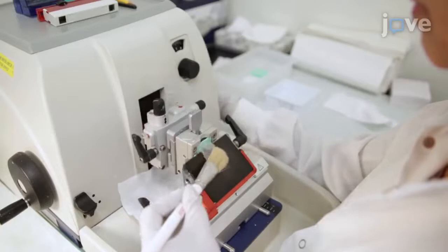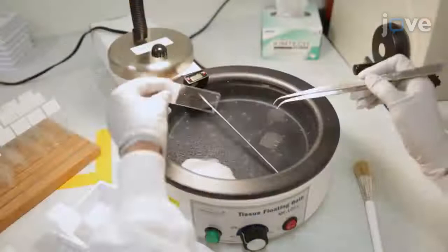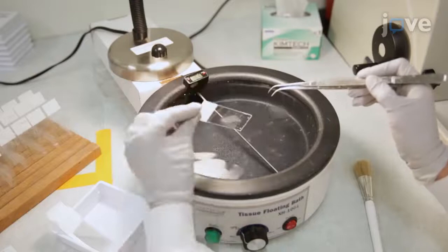Cut the embedded tissue into five plus or minus one micron sections using a microtome, mount the sections on electrostatically adhesive glass slides, and air dry at room temperature overnight.